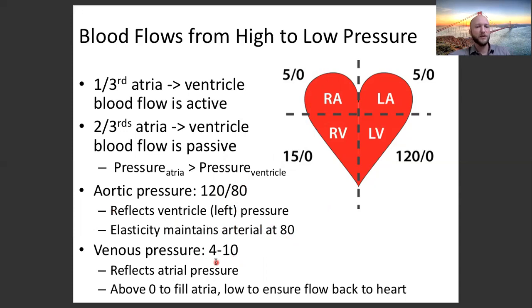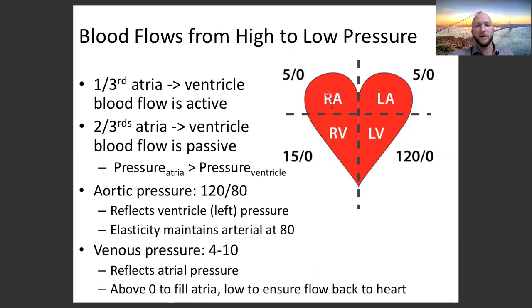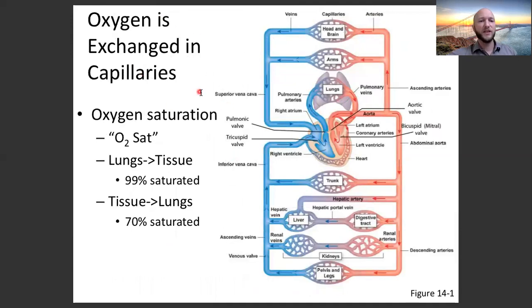Venous pressure is usually about 4 to 10 mmHg. It must be above zero so blood flows from the venous system into the ventricles, but lower than the aorta to ensure flow back to the heart. Oxygen is exchanged only in capillaries — no oxygen moves in or out of the aorta, vena cava, or abdominal aorta. The capillaries are where oxygen moves in and out of the circulatory system.